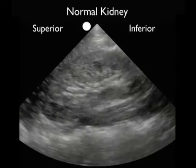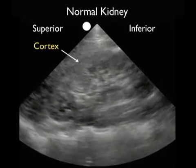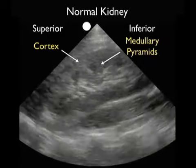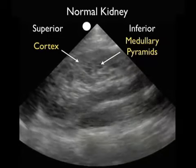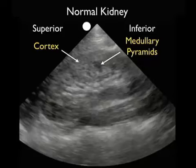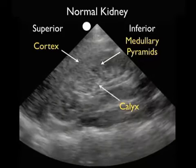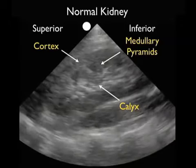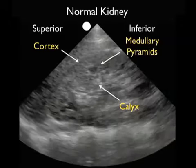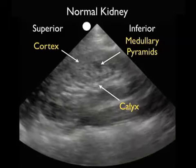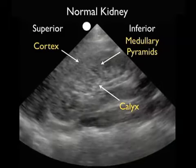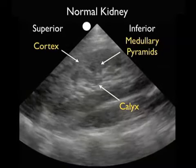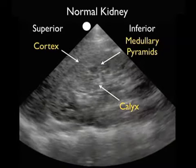Here's a typical normal kidney on bedside ultrasound. The probe marker is oriented towards the patient's head, so the superior pole is to the left and inferior to the right. We see the outer cortex as the peripheral rim of the kidney, and just interior to that, the medullary pyramids, which have a slightly darker or hypoechoic appearance due to fluid within them. The inner calyceal region has a bright appearance on bedside sonography due to fat within the renal sinuses.